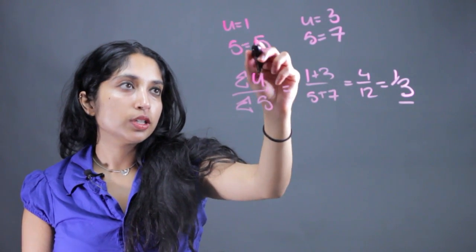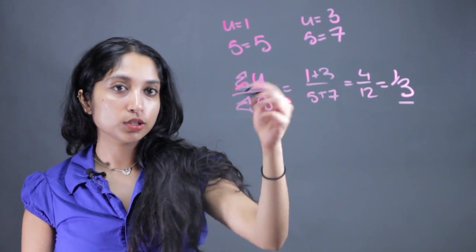So basically, for every one unshaded, we have 3 shaded. So that's a good way to think about that.